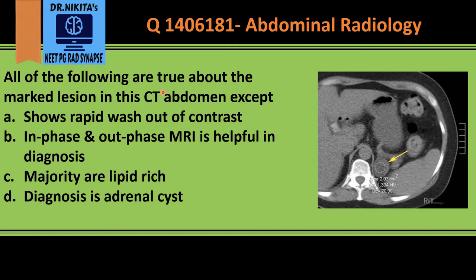All of the following are true about the marked lesion in the CT abdomen except. This is a CT abdomen where the bones are white, so it's a CT scan. It is a non-contrast CT because the aorta is gray — in a contrast CT the aorta would be white. We see this lesion which is medial to the spleen, and lateral to the diaphragmatic crus, which is the location of the adrenal gland.